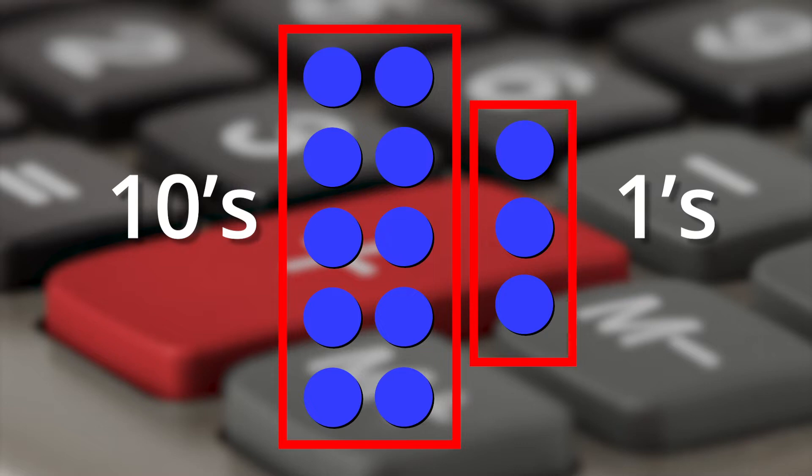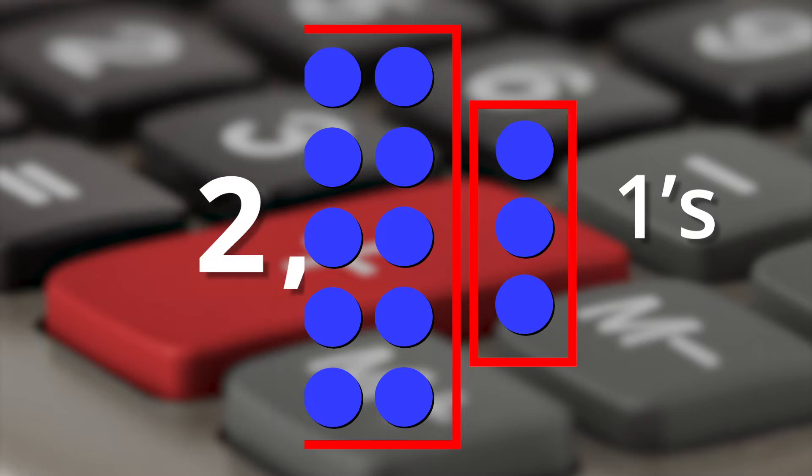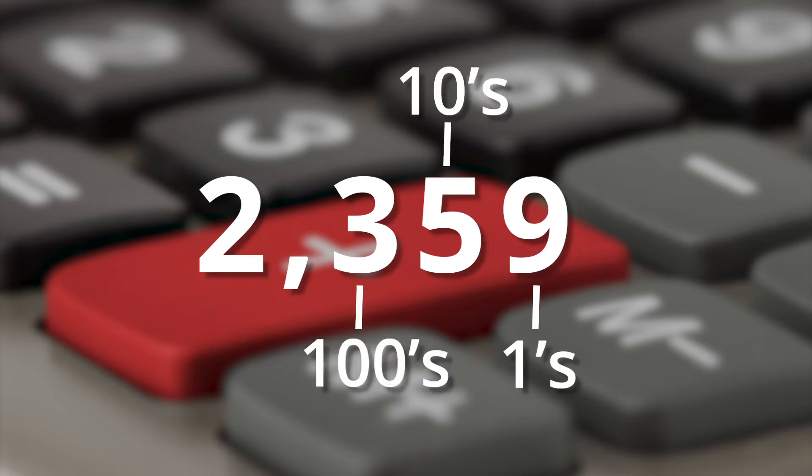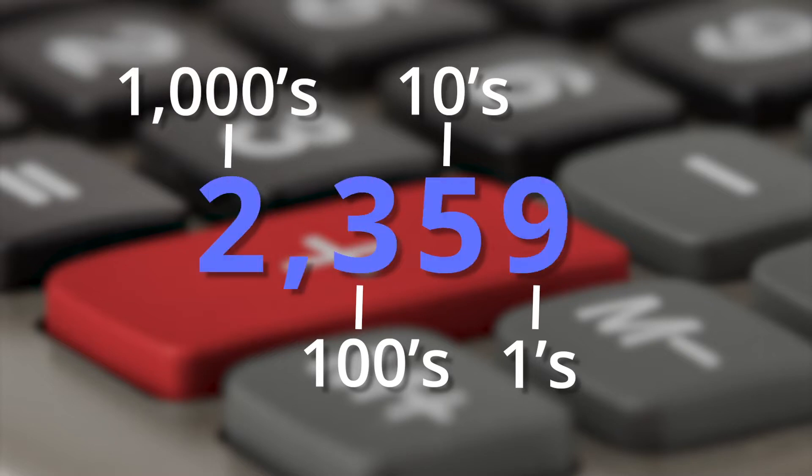There is one group of 10 dots in the tens place and three single dots in the ones place. Here's a quick description of what we mean by tens place and ones place. Take the number 2359, for example. In that number, nine is in the ones place, five is in the tens place, three is in the hundreds place, and two is in the thousands place. You read numbers from left to right. The further left you go, the larger the number.